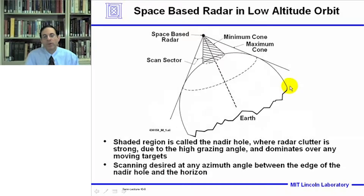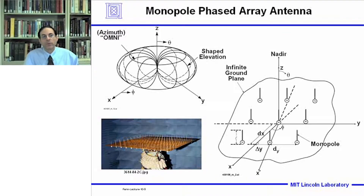The application in mind is a space-based radar in low-altitude orbit. For this type of system, in lecture number nine we talked about a monopole array that provided a null looking straight down at the Earth and had maximum gain toward the horizon. This slide shows a monopole phased array antenna which has a shaped elevation pattern and is omnidirectional in azimuth. Here's a photograph of a monopole array, described in detail in lecture number nine. This shows a sketch of the monopole array.